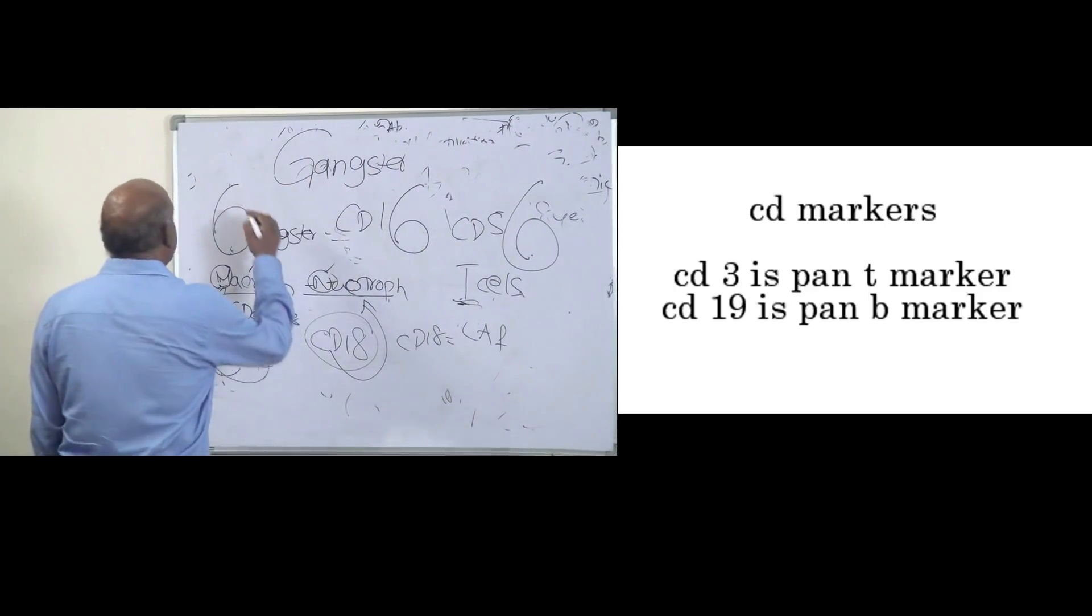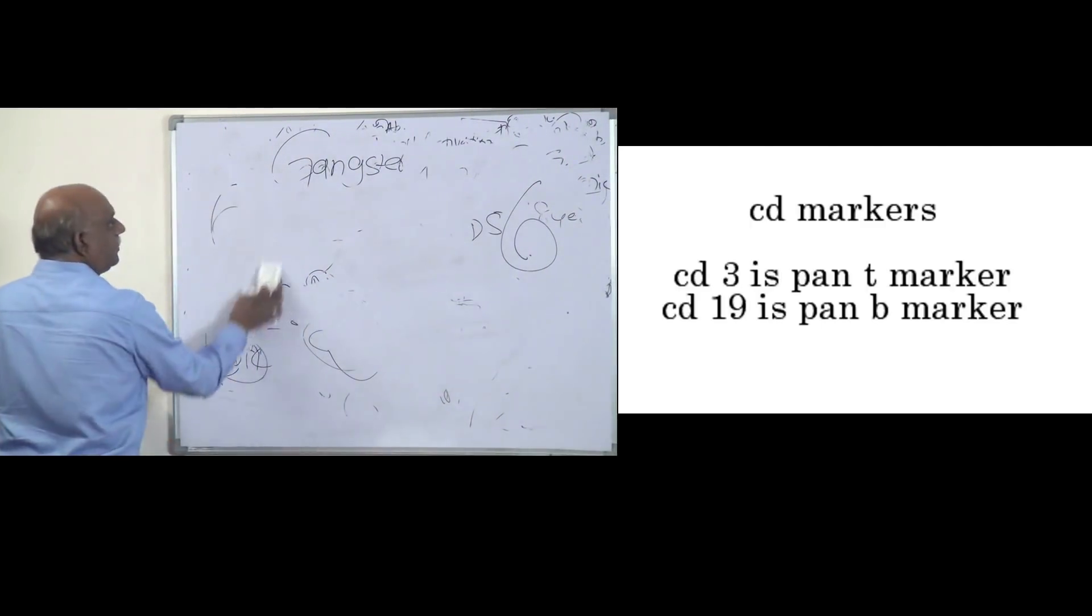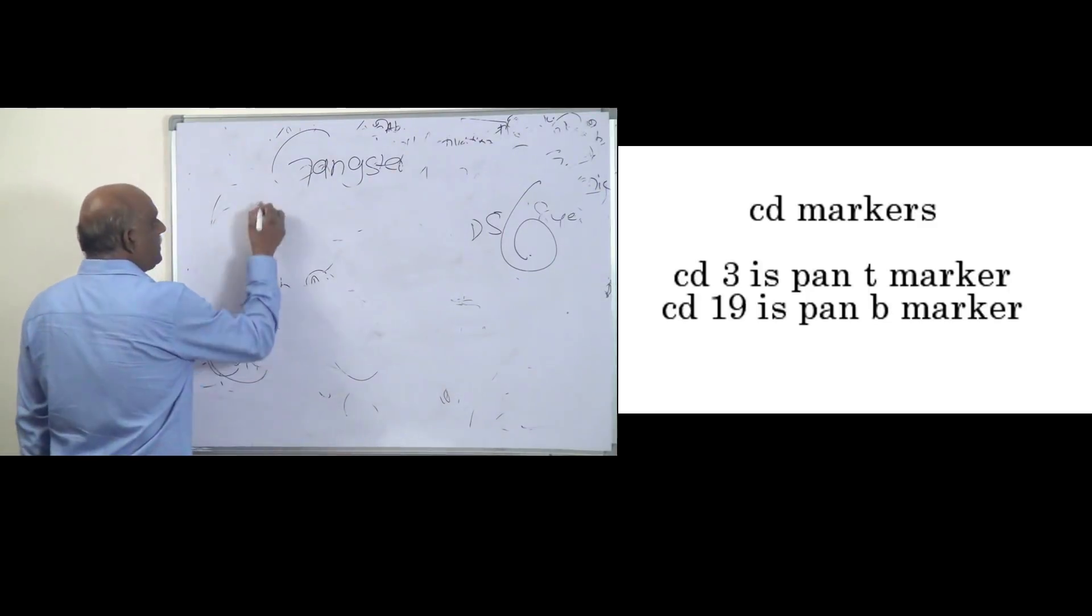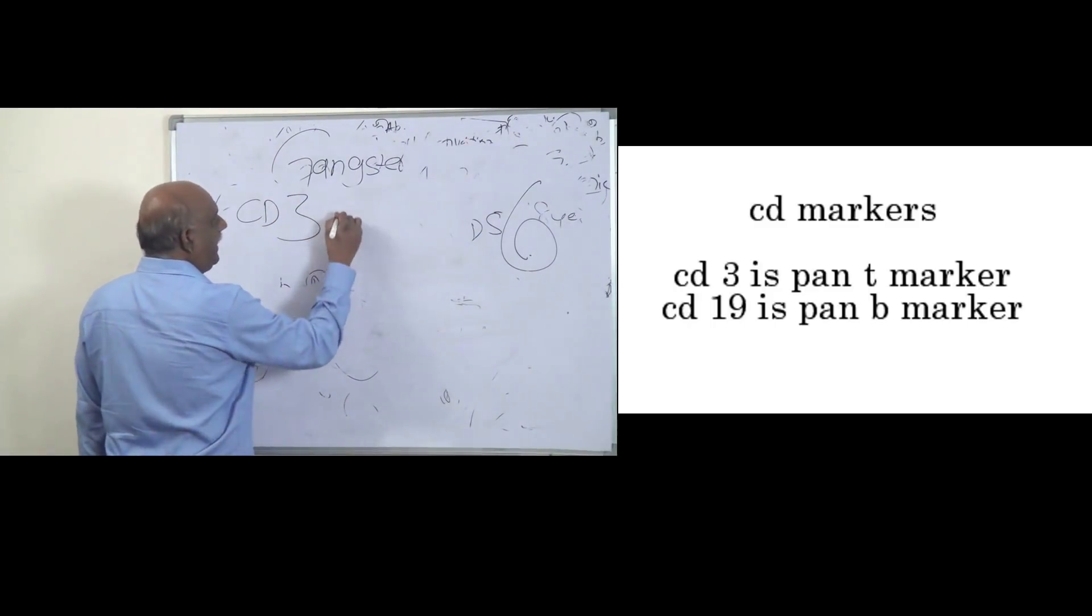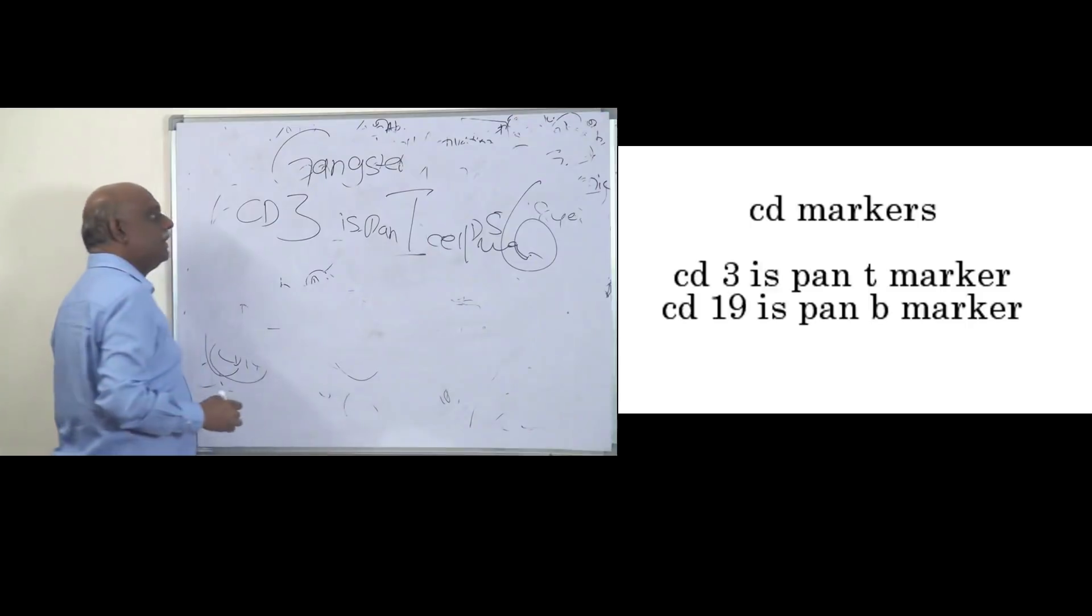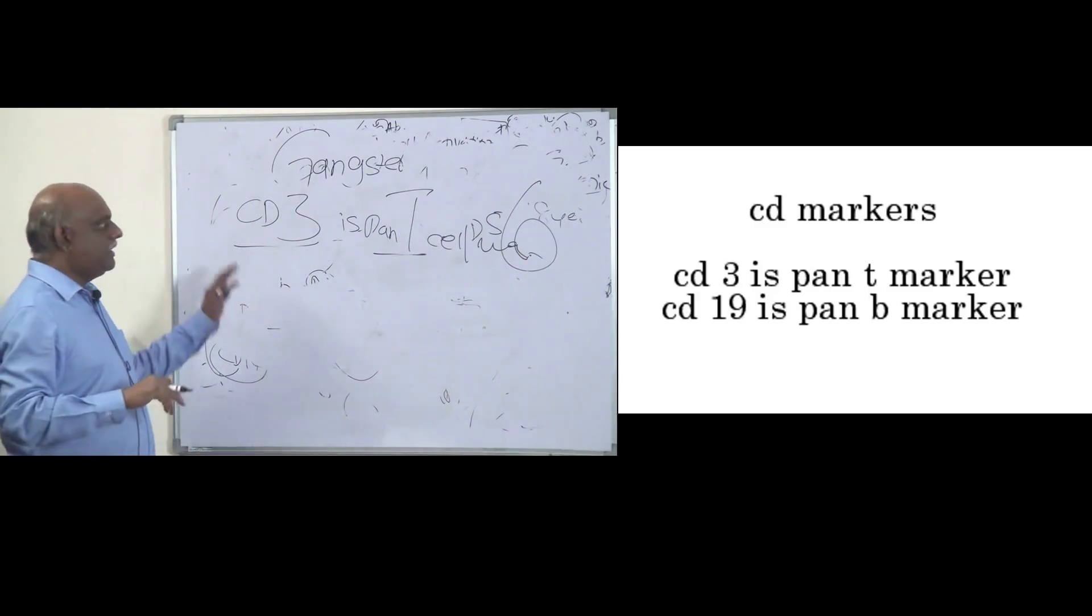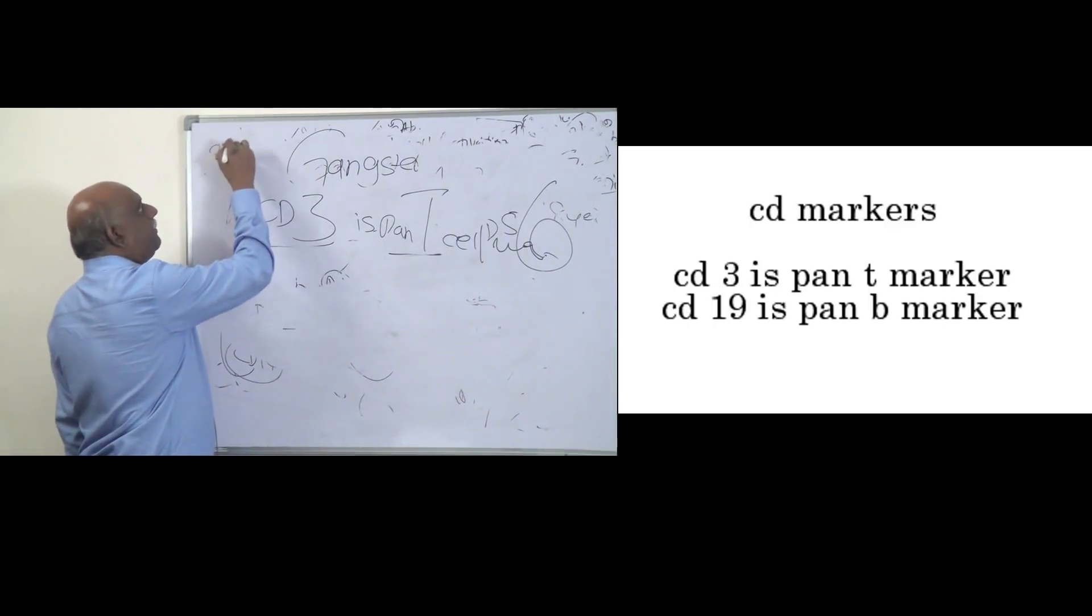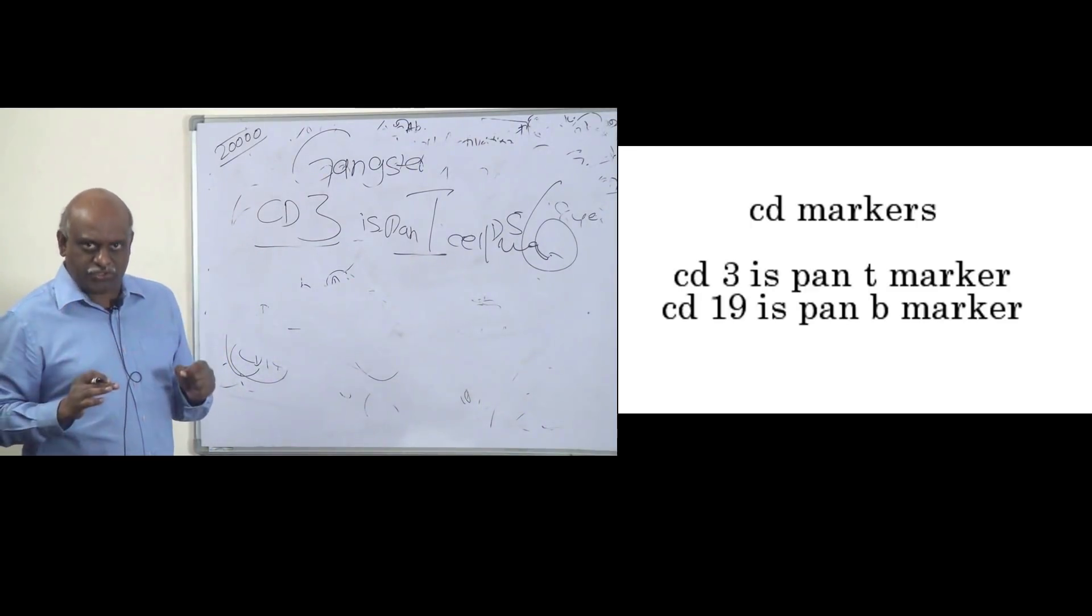And the deficiency of CD18 makes the leukocytes to not adhere anymore to the vascular endothelium is what you have to remember. Then there are two things that examiner will ask you. Two important type of markers which you should not forget. What are those two important markers? CD3 is pan-T cell marker. How will you remember? CD3 is pan-T cell marker. CD3 is something which you should not forget. So that is the reason, doctor, I am telling you, in NEET-PG exam, 20,000 points.